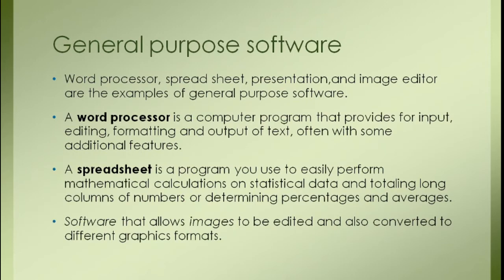General Purpose Software is an example of application software. Application software has two major categories: system software and application software. Application software has two categories — general purpose and specific purpose. General purpose software we also call packages. General purpose software can do a limited but wide variety of work.